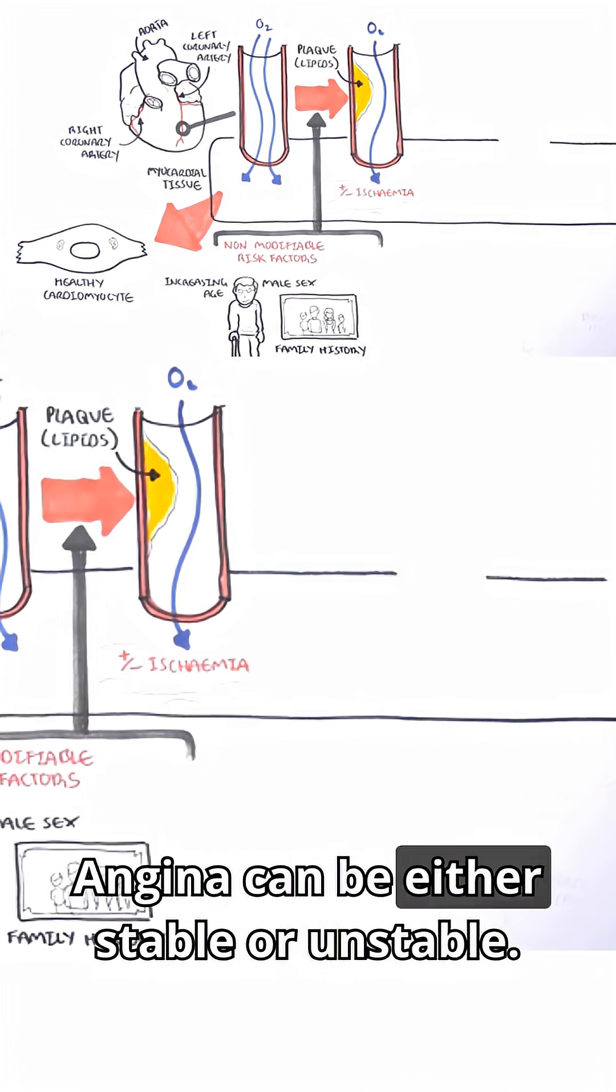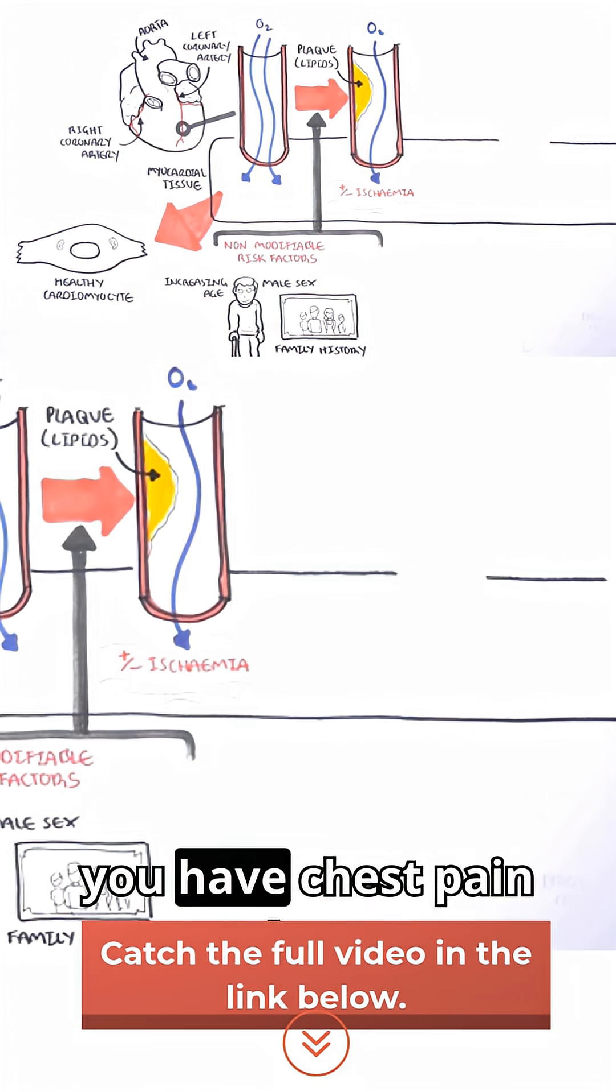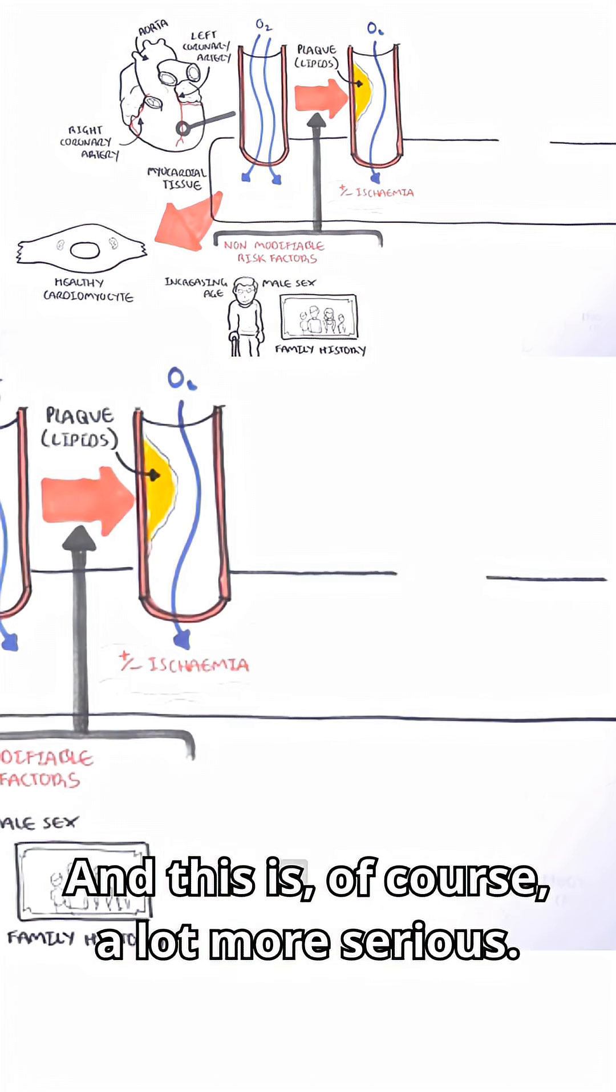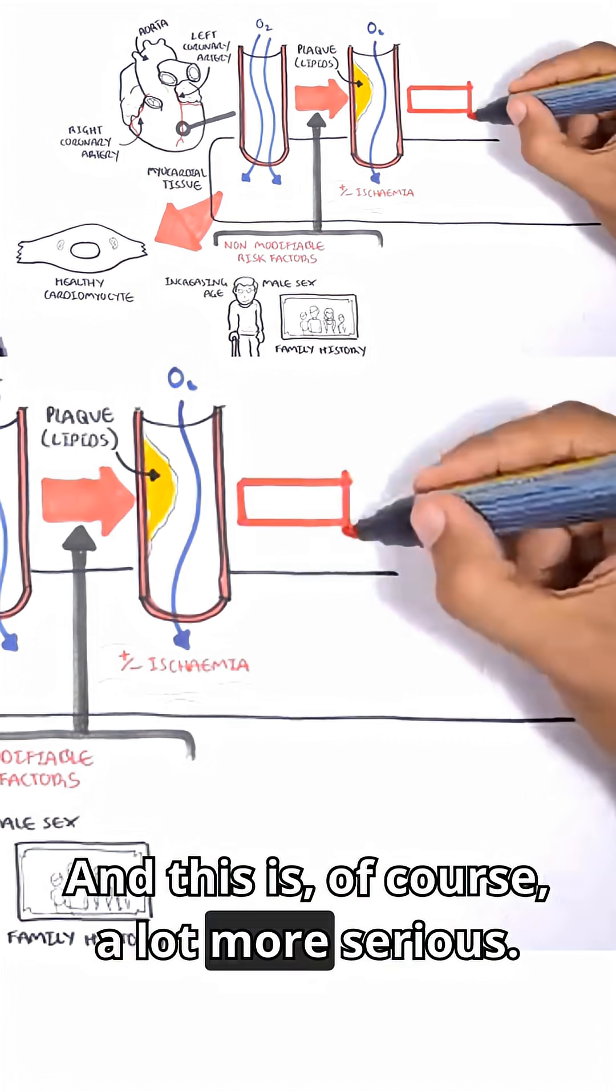Angina can be either stable or unstable. In unstable, you have chest pain even when you're resting, and this is of course a lot more serious.